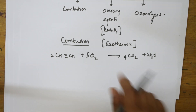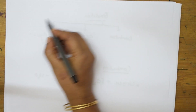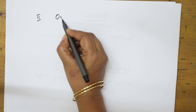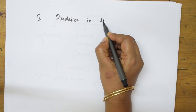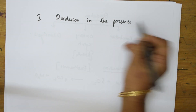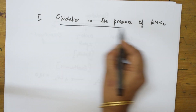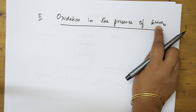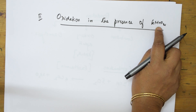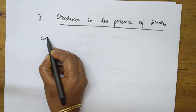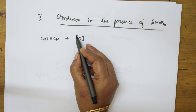Now suppose if I take the same oxidation reaction using KMnO₄. We will study the second type of oxidation reaction — oxidation in the presence of KMnO₄. KMnO₄ is an oxidizing agent that supplies nascent oxygen. I have already shown this KMnO₄ reaction for alkynes — please watch that video. I am again going to take an alkyne, and KMnO₄ will release nascent oxygen.